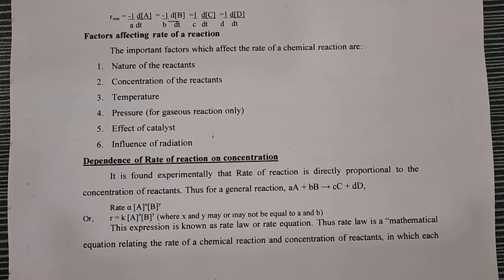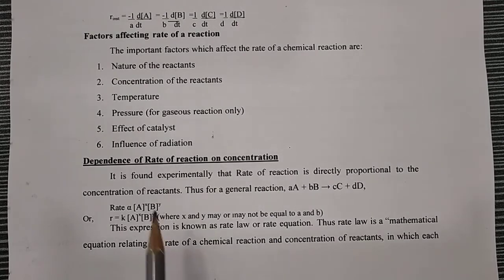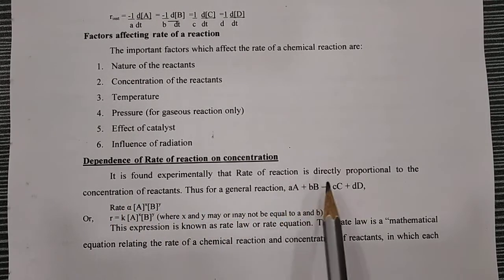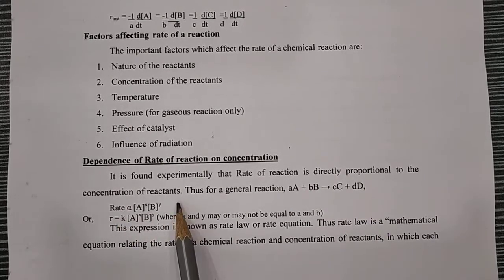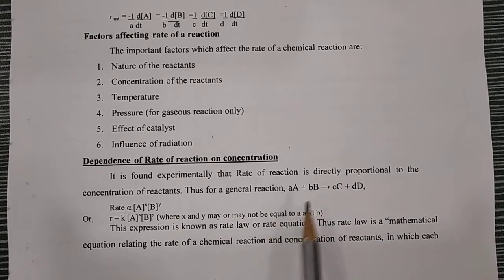Next, we start with the dependence of rate of reaction on concentration. It is found experimentally that the rate of reaction is directly proportional to the concentration of reactant. For the general reaction: aA + bB → cC + dD.